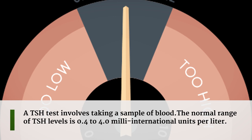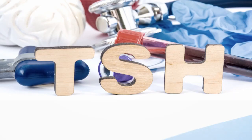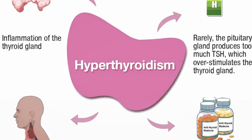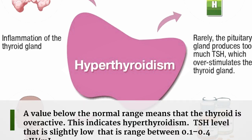The normal range of TSH levels is 0.4 to 4.0 milli-international units per liter. A value above the normal range usually indicates that the thyroid is underactive, or hypothyroidism. If TSH measures greater than 4.0 with a low T4 level, this indicates hypothyroidism.